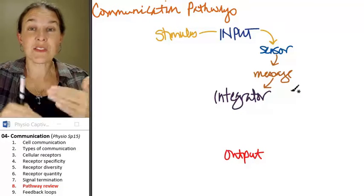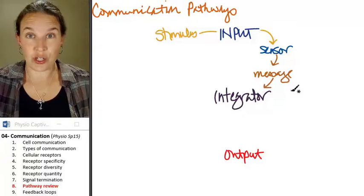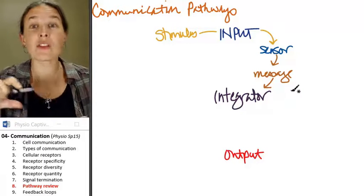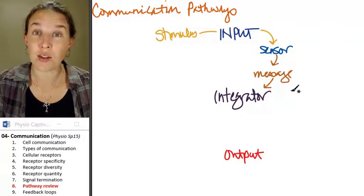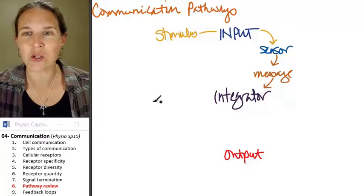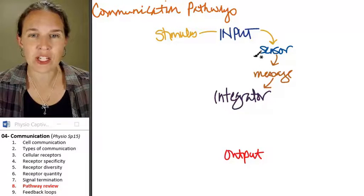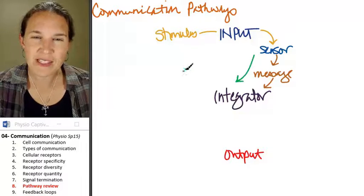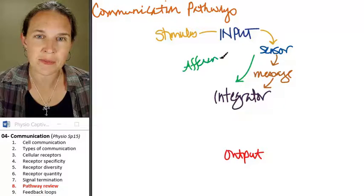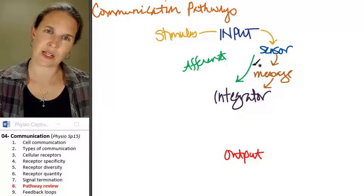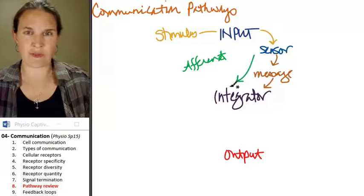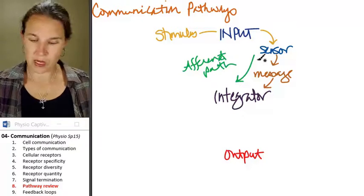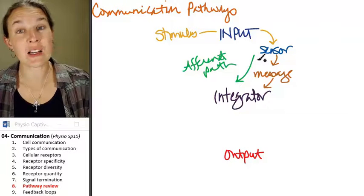Now, if the sensor is a neural structure, then the input message travels along a neuron through an afferent path. I'm just going to put a little note here that this section right here, I'm going to put a green arrow. If it's a neural pathway, that's the afferent path. Afferent.